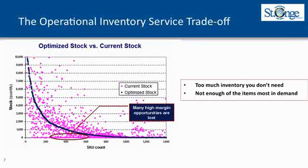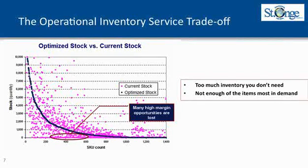Going across on the x-axis and on the y-axis from bottom to top you've got stock in quantity. For some SKUs you want to carry more stock, for other SKUs you want to carry less stock, depending on the demand trends and things of that sort.